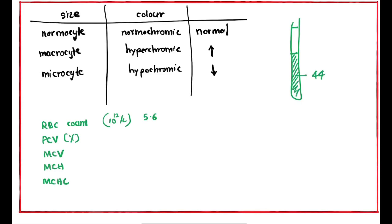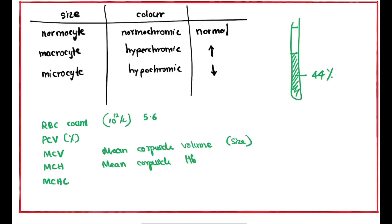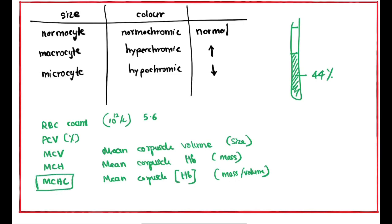In the blood count parameters, we look at the RBC count. MCV stands for mean corpuscular volume — the mean volume of a red blood cell. MCH stands for mean corpuscular hemoglobin. MCHC stands for mean corpuscular hemoglobin concentration — this refers to the concentration of hemoglobin per unit volume of red blood cells. A low MCHC indicates hypochromic anemia.